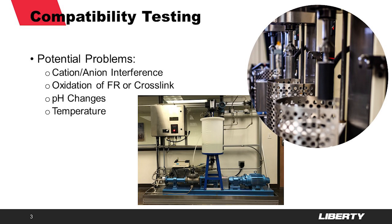Oxidizers are another group of commonly used biocides that can cause issues by prematurely breaking down the friction reducers and cross-link fluids, whether they are pumped upstream or at the blender. Again, we can check the FR in a flow loop, and cross-link fluids can be tested with our rotational viscometers.